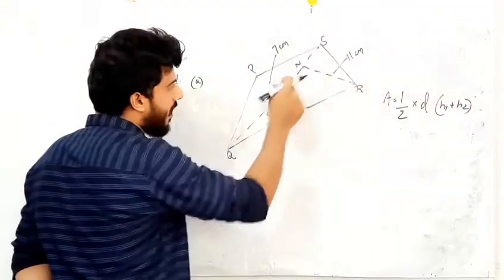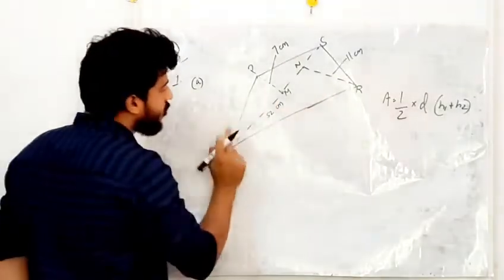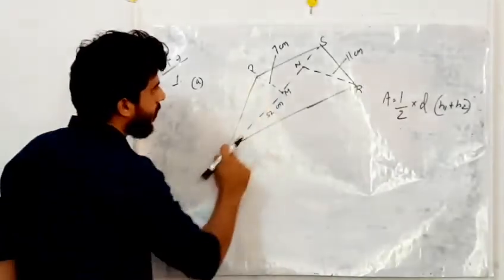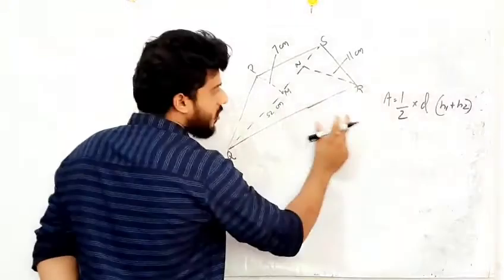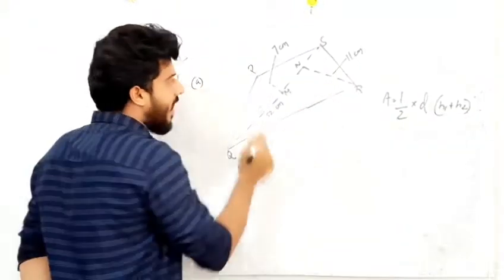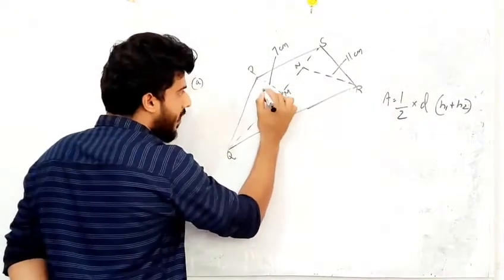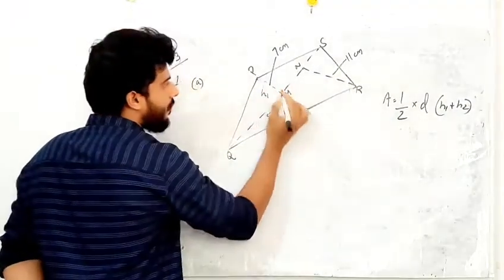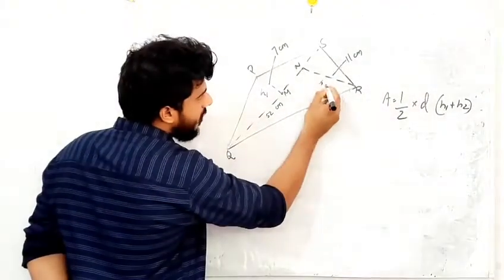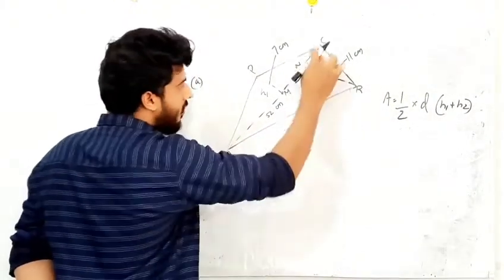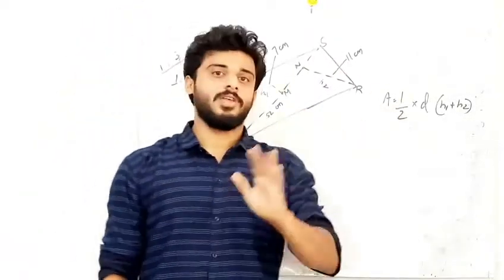A quadrilateral, when divided by a diagonal, forms two triangles: triangle PQS and triangle QSR. These two triangles have heights — the height of the first triangle is PM, that is h1, and the height of the second triangle is RN, that is h2. QS is our diagonal d.